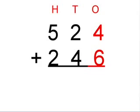First you add the two numbers in the ones column, which are 4 and 6, which equals 10. You put down the 0 and carry the 1 into the tens column.